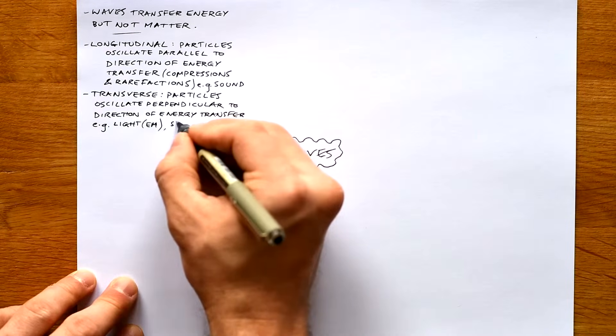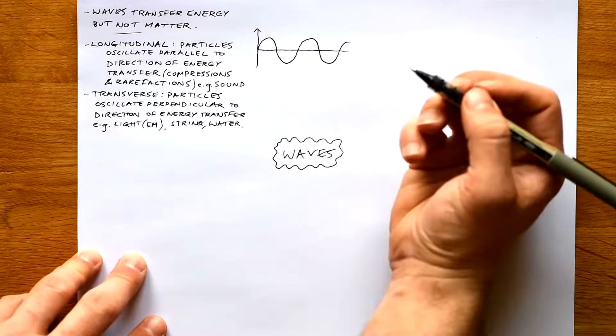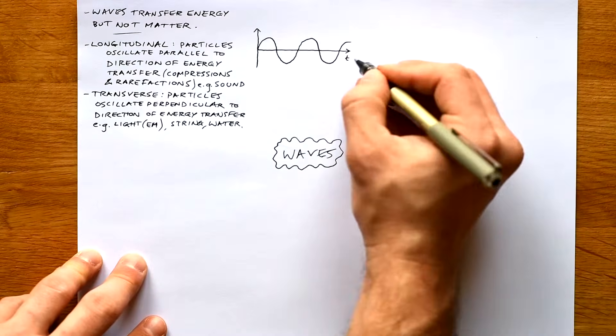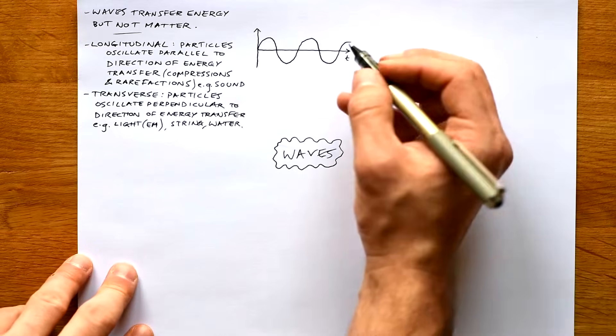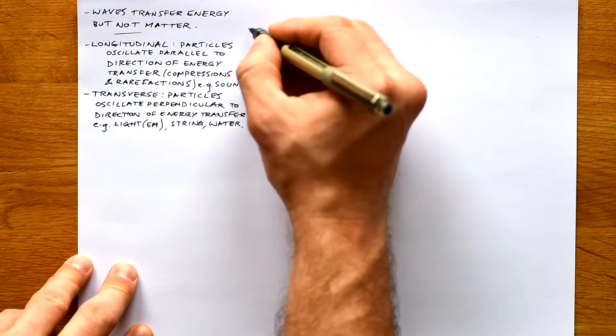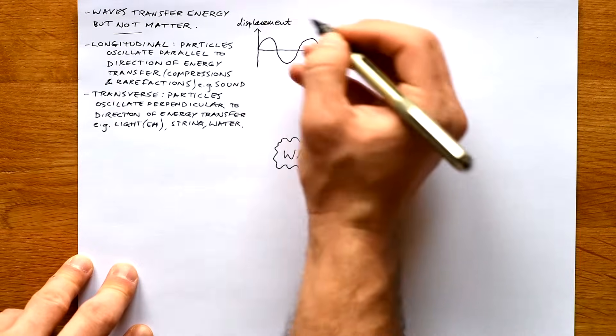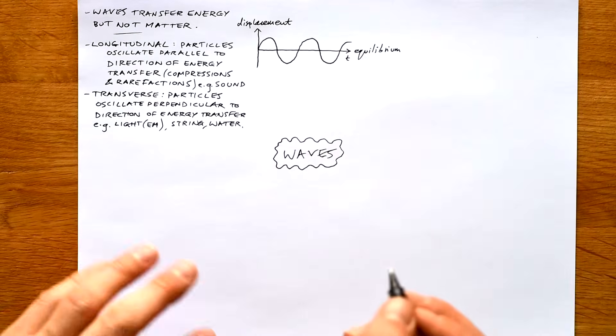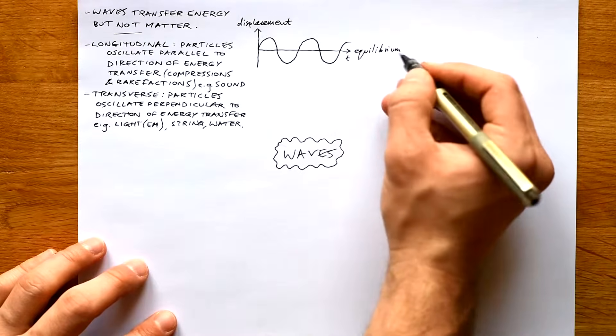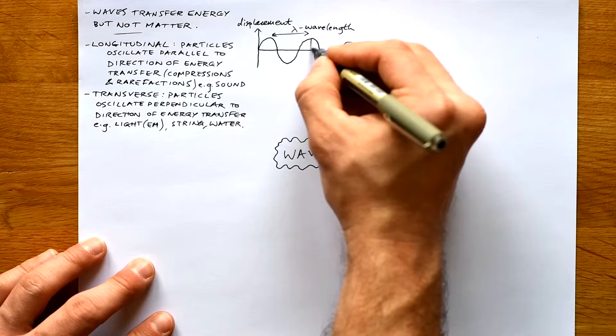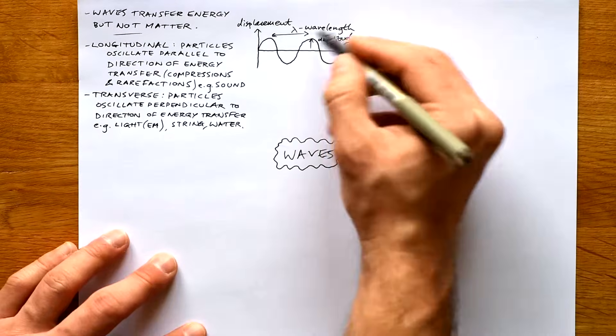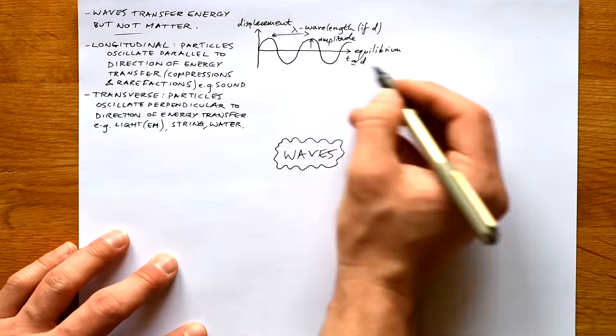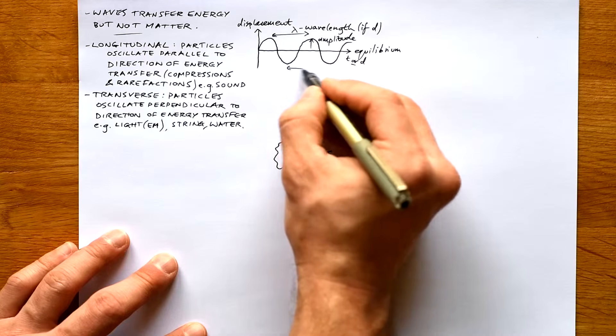So this is your standard wave. This could be time, it could also be distance. Usually it's time. This axis here is displacement from the midpoint which is equilibrium, so where the particles are when they're not oscillating. This here is lambda, that's wavelength. This here is amplitude. It would be wavelength if this is distance. If it's time on the x-axis, then distance between one peak and the next, we don't have wavelength but we have time period.